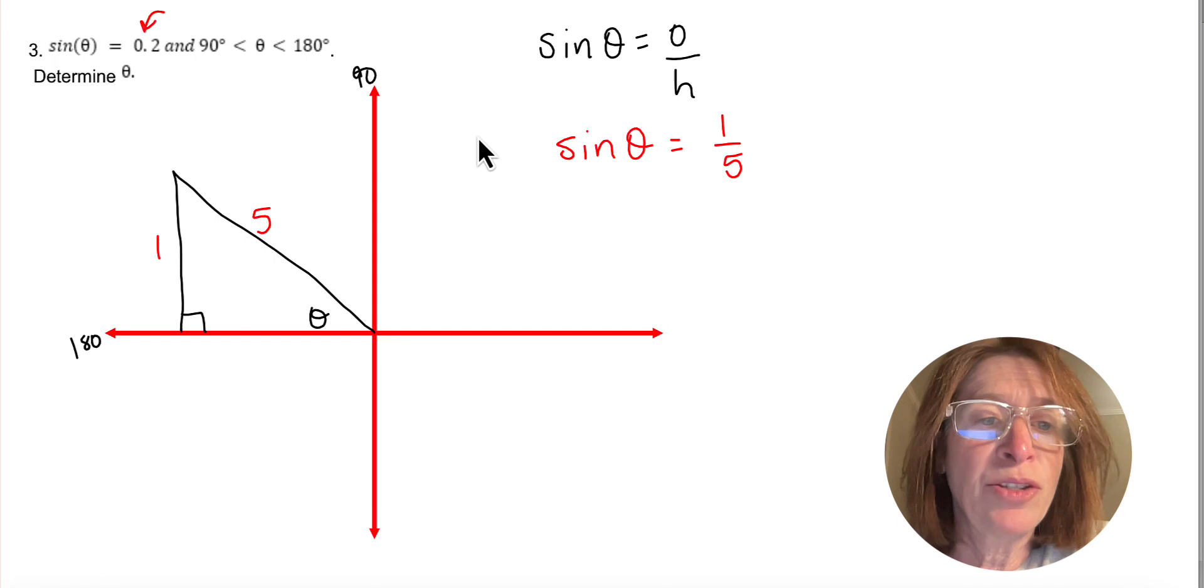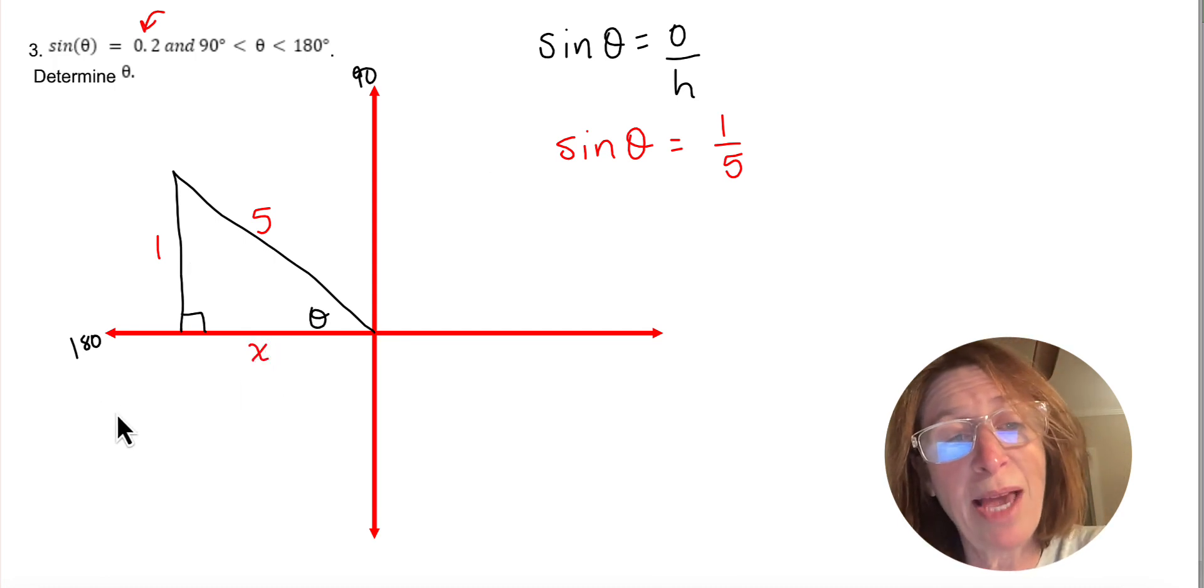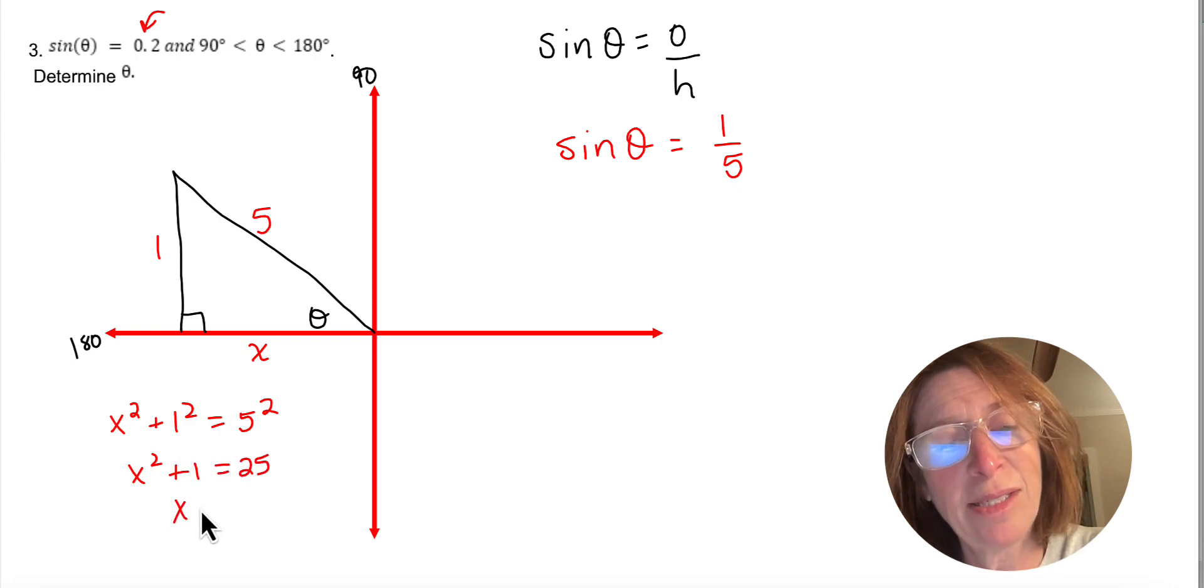So now I'm going to find my third side, so I'm going to label that x. And now you do have to use the Pythagorean theorem. So x squared plus 1 squared equals 5 squared. So x squared plus 1 equals 25. x squared equals 24, and I take the square root of both sides.